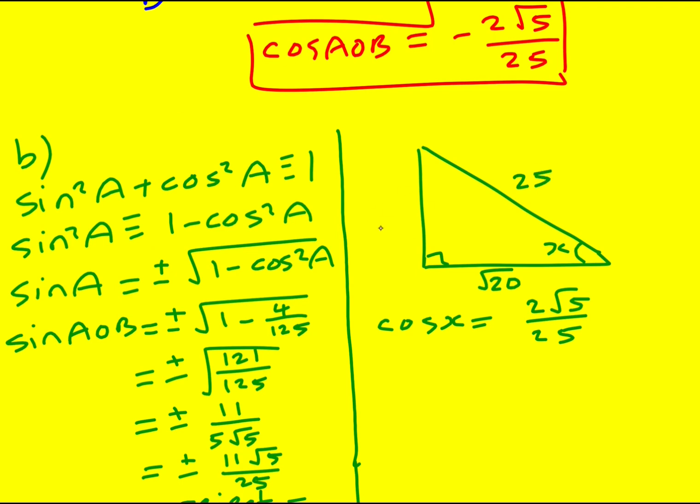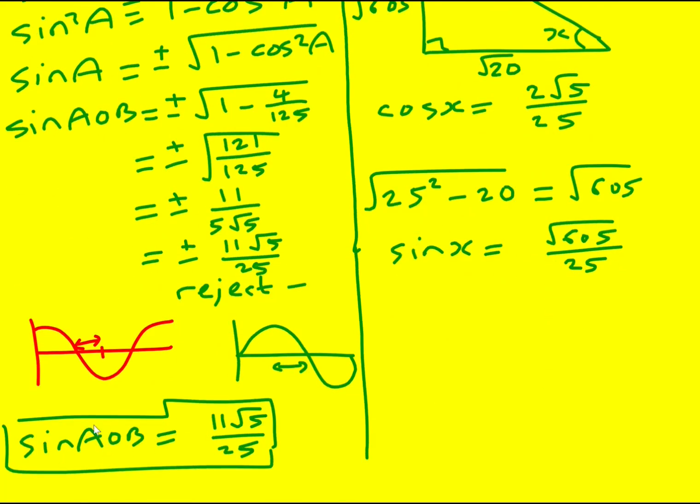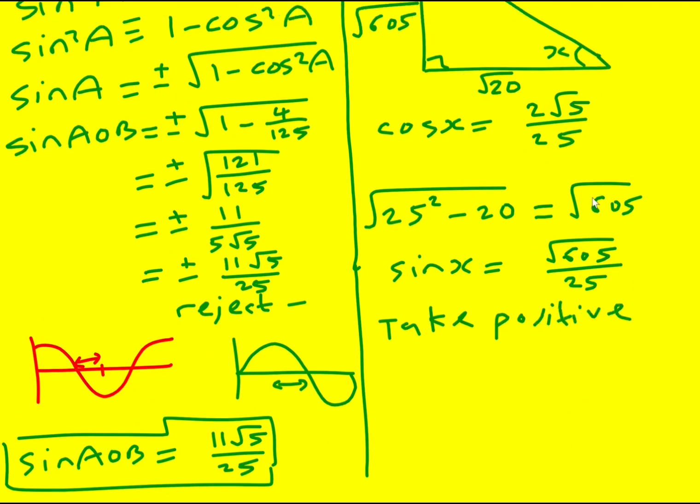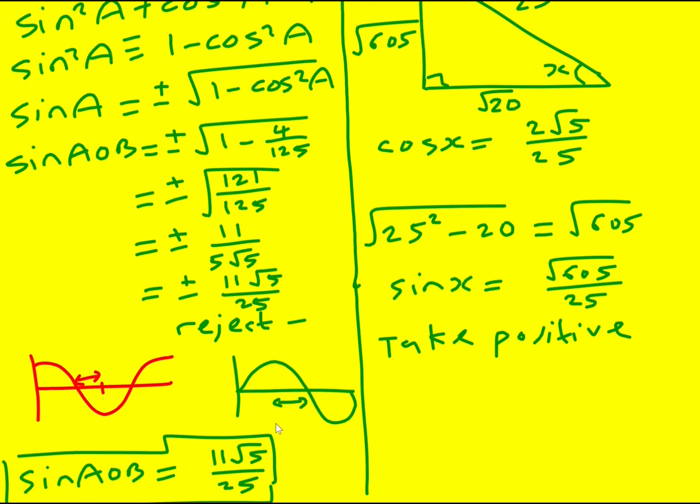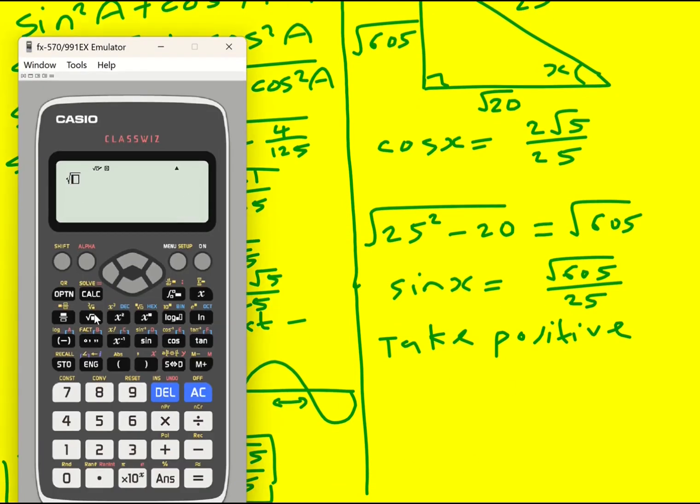So now if I want sine, I need the opposite. So the opposite is going to be 25 squared minus 20, square rooted, which is going to be root 605. So now I can find sine x because it's going to be root 605 over 25. And the thing is, I know it's going to be positive, so take positive. I'm always going to get a positive when I draw an acute angled triangle, but I need to relate it back to the original problem where I had a negative, and just think, is sine positive or negative? But like I did over here, it's going to be positive. And then I'm nearly there. 605 divided by 25 is going to give us our 11 root 5 over 25 that we had before.